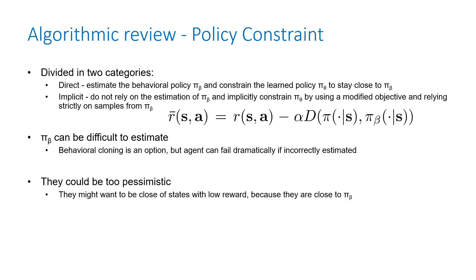Now let's go through algorithm categories, starting with policy constraint — one of the most successful. There are two options: direct and implicit. For direct, you estimate the behavioral policy and constrain the new policy to stay as close as possible. For implicit, you do not estimate the behavioral policy; you constrain the policy relative to the samples. Estimating the behavioral policy can be difficult and the agent can fail miserably if not properly estimated — it could be too pessimistic. Usually the implicit approach works better.